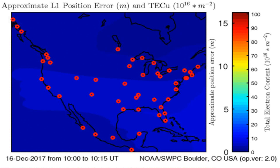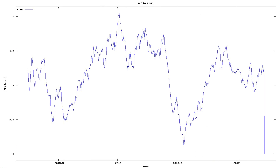Here we see the total electron content above the Earth. Anomalies in total electron content have sometimes preceded earthquakes below that area on Earth.